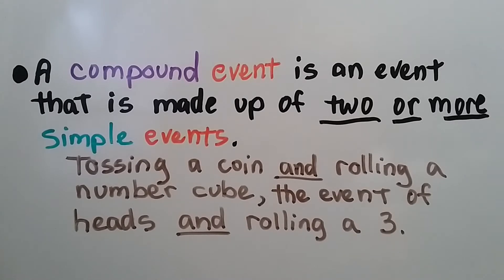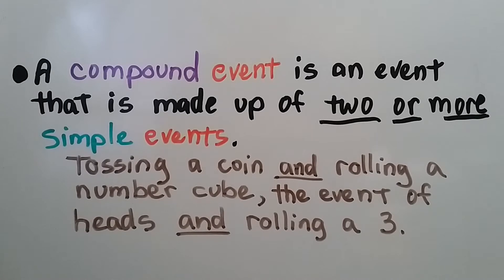A compound event is an event that is made up of two or more simple events. So it would be like tossing a coin and rolling a number cube — getting heads on the coin and rolling a three on the number cube. They're separate from each other; it's two simple events, but together they make a compound event.